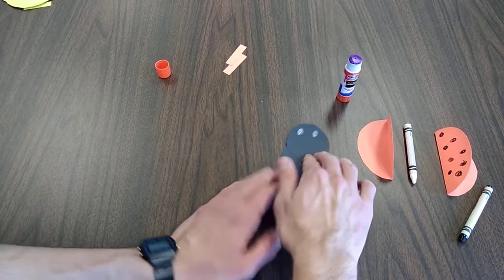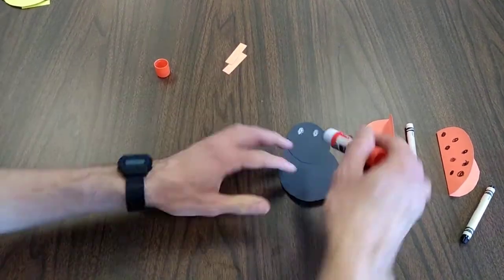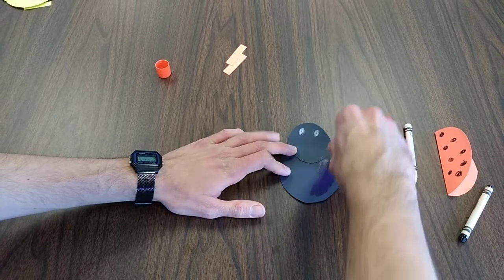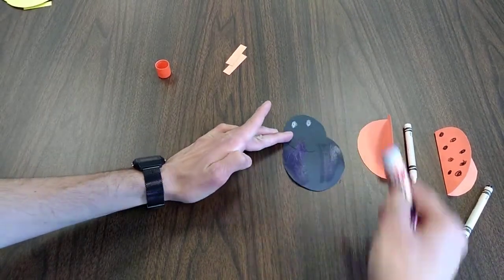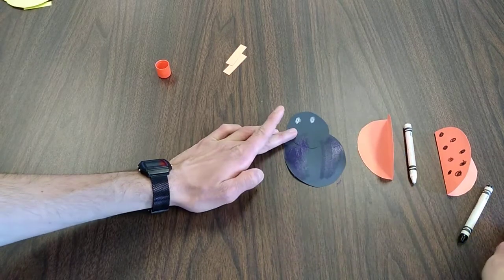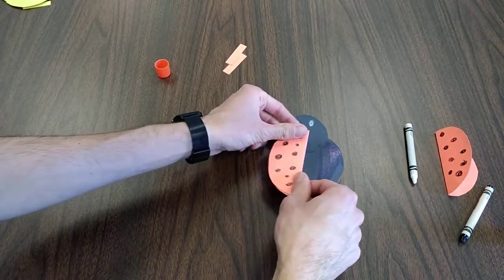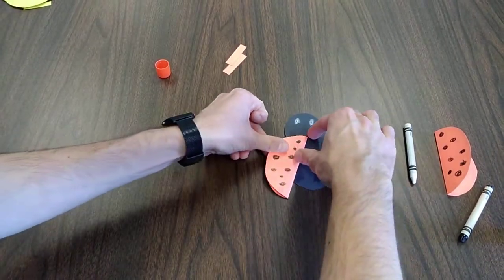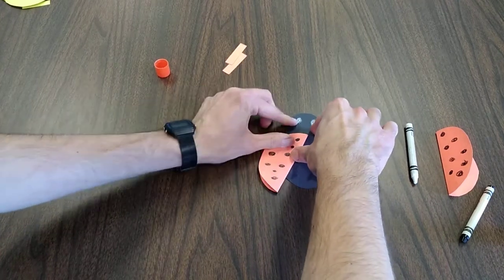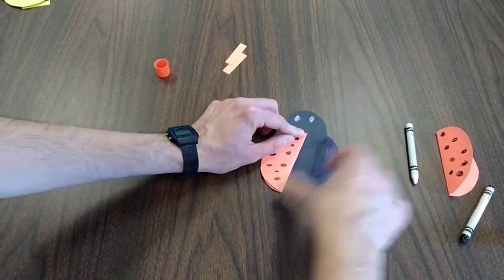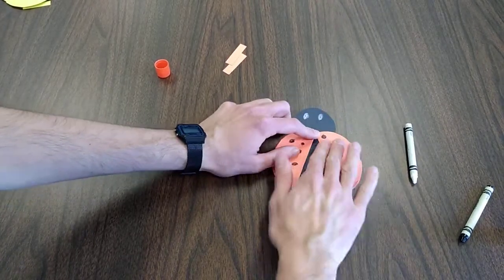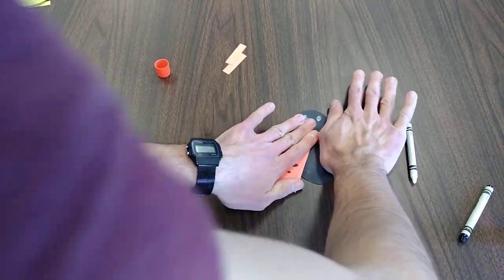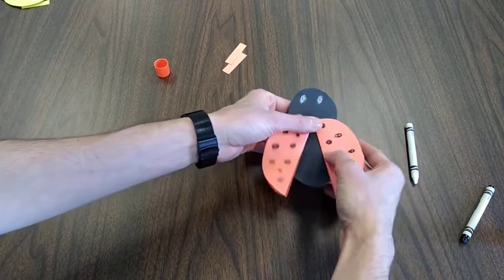Next, put glue on the sides, as so. We're going to stick on the wings. Wing one, and wing two. There we go. Form it on.